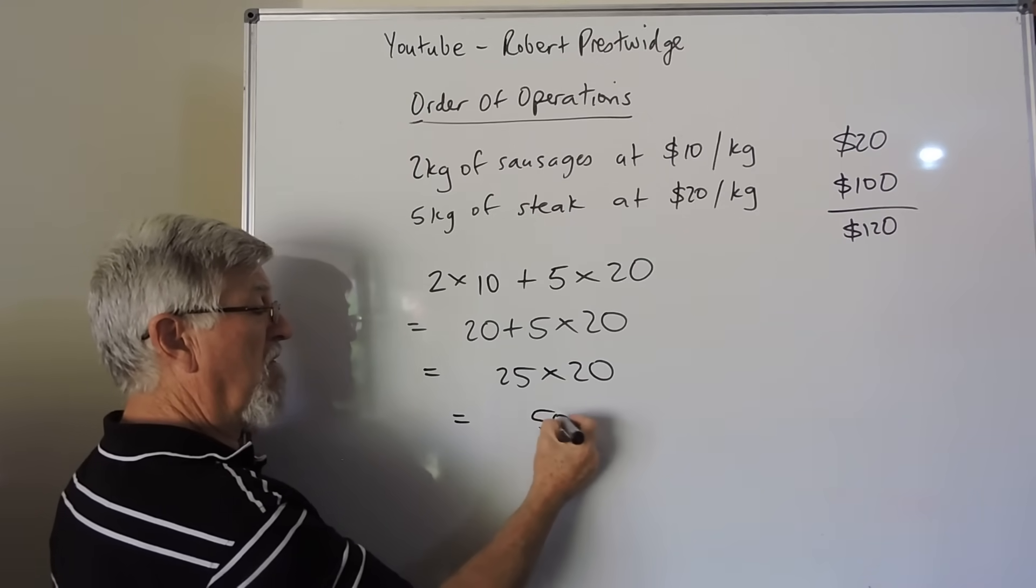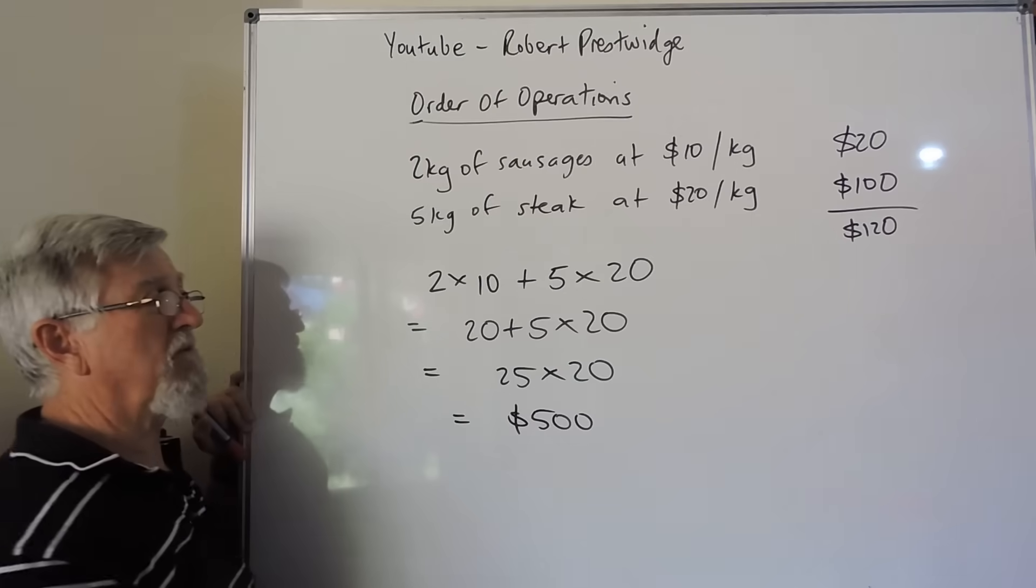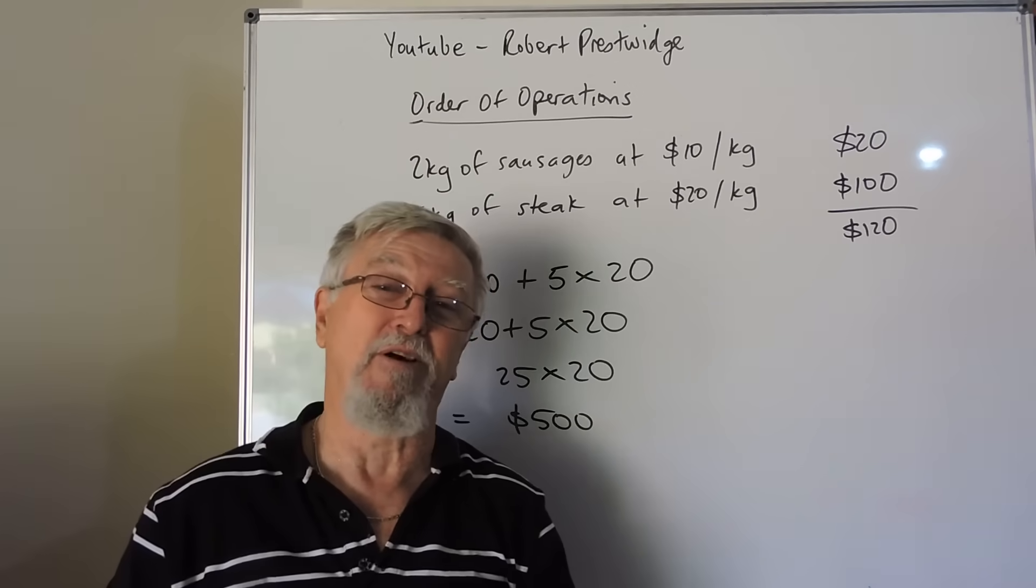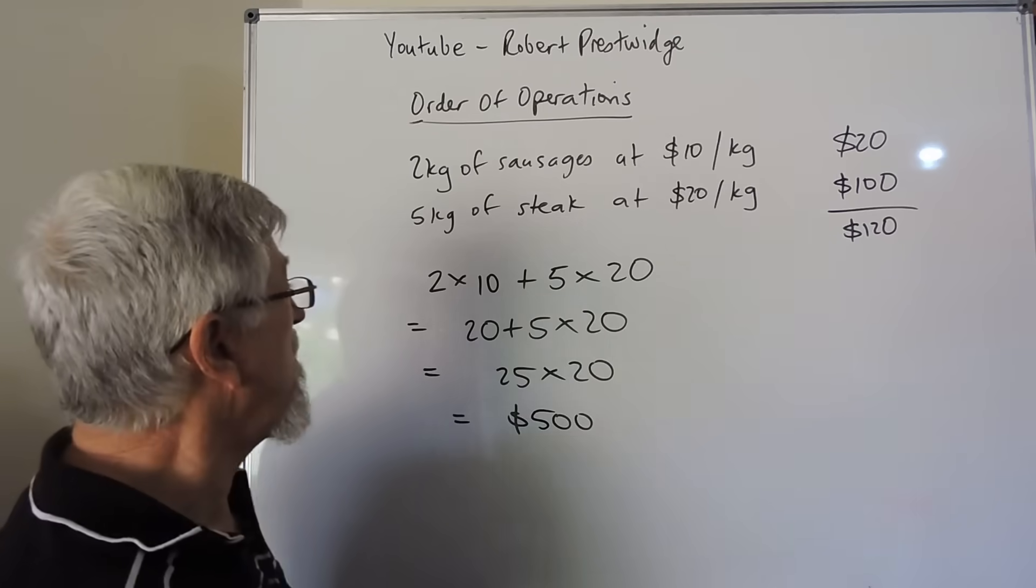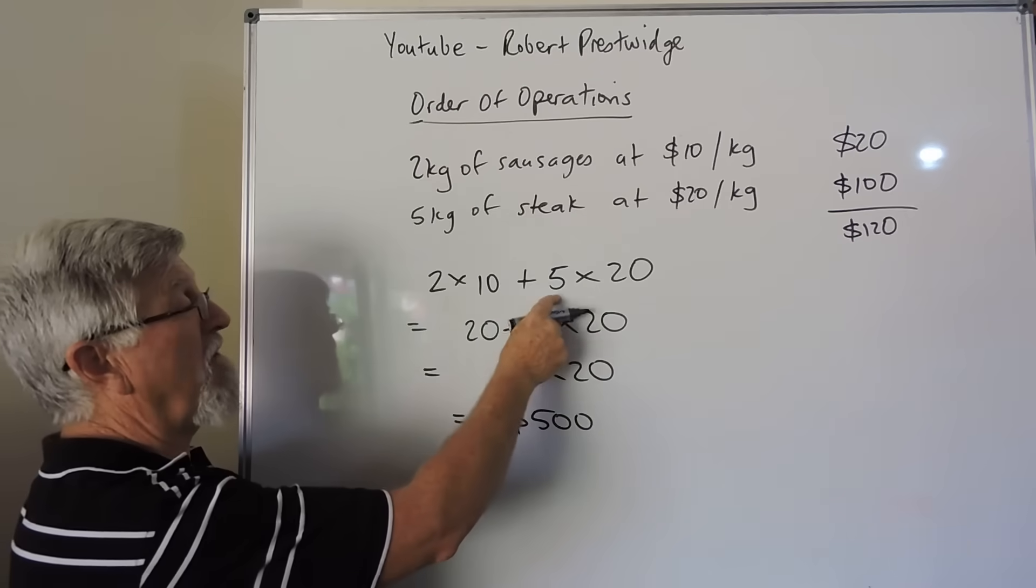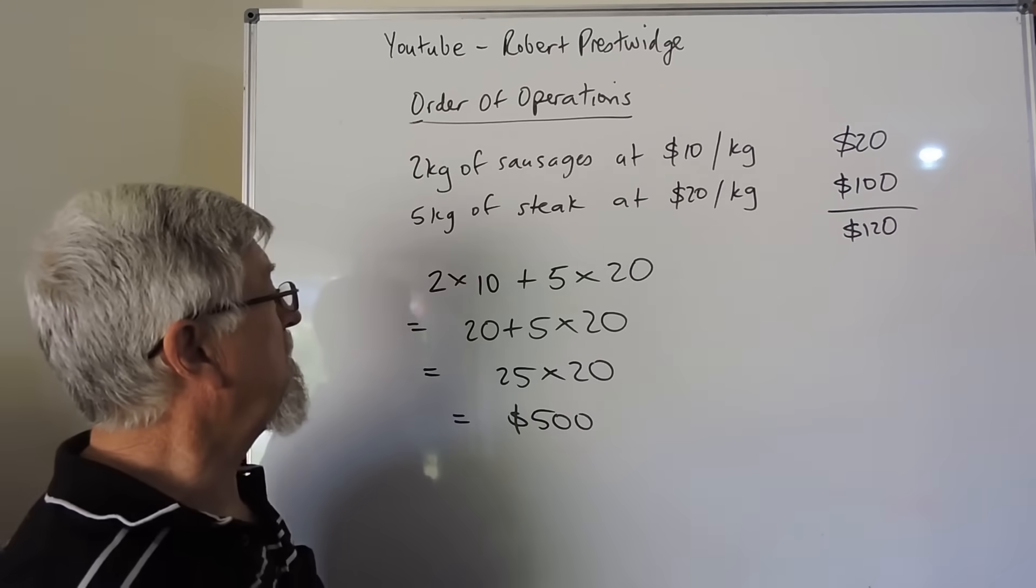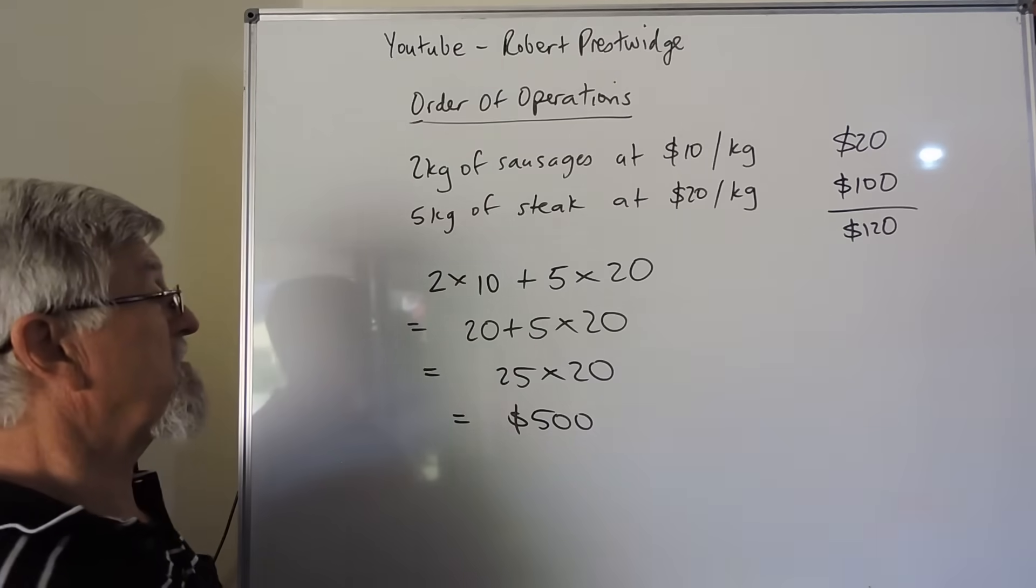And that ends up being 500. So can you imagine you walk in to buy some steak and you expect to spend $120 and the butcher charges you $500 and you go, no you got it wrong. And they say, no, no it's just 2 times 10, add the 5 and then multiply by 20. So that's the first chance to have a look at it and see that order of operations is important.